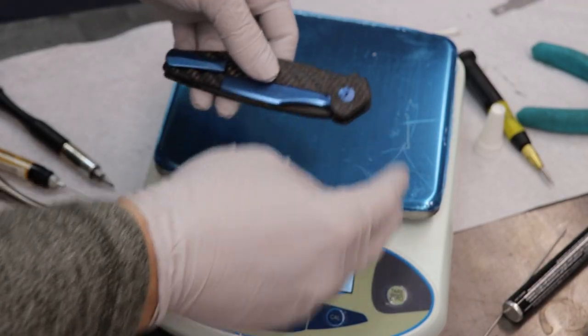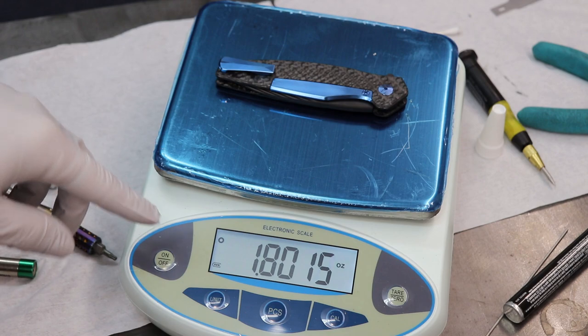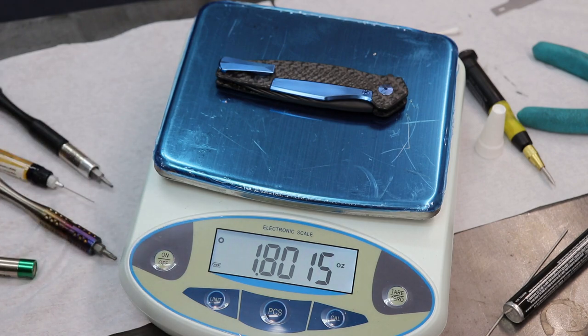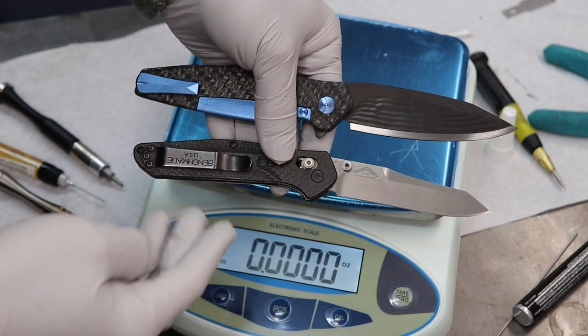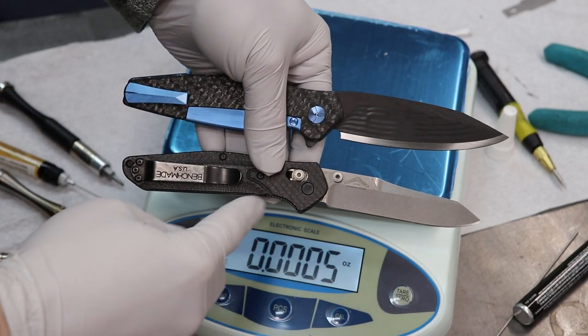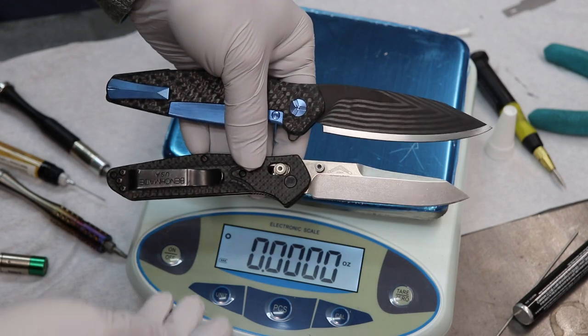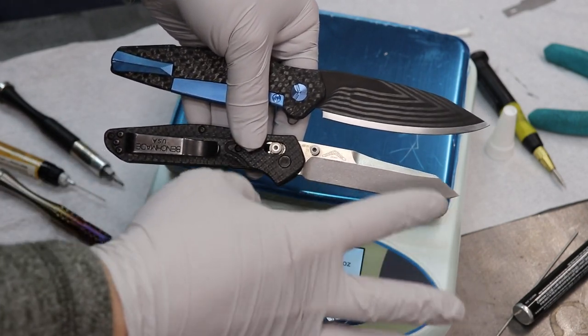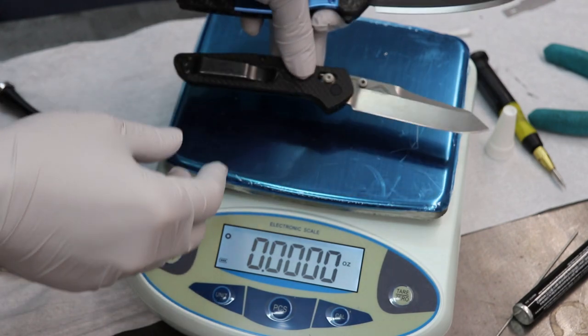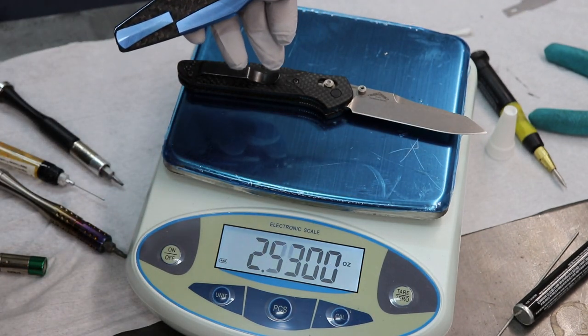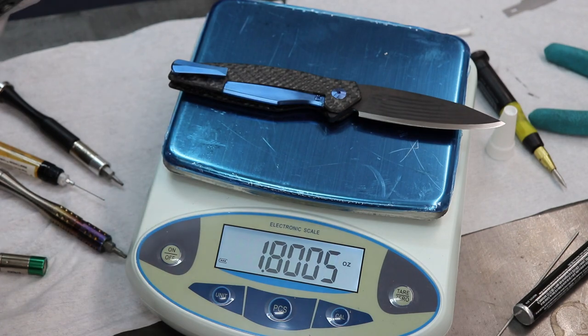I almost forgot to check the weight on it. 1.801 ounces. 51.04 grams in case anybody wants that. So just for a frame of reference, this is a Benchmade 940-01. So it has a carbon fiber handle scale. This is one of the lightest ones they make, and it's generally considered a pretty light knife. And it's similar in size, slightly shorter than mine. So this is a larger knife. Weighs 1.8 ounces. This one, 2.4. 1.8. All right.